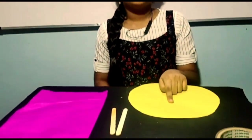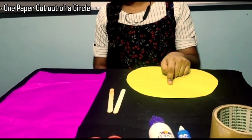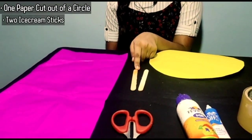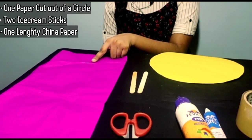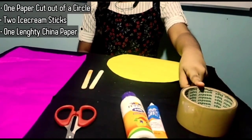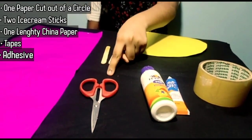For the working model of angles you need: one circle of radius 12 cm, two ice cream sticks, one thin paper - here it is called china paper, one cello tape, glue and scissor.